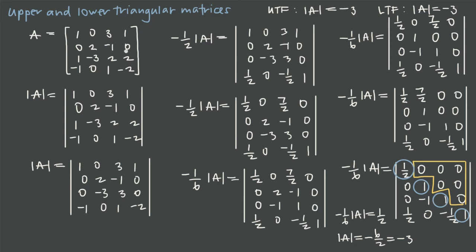This confirms that whether you use upper or lower triangular form, you get the same determinant. This method — converting a matrix to triangular form — is a fast and reliable way to calculate the determinant.